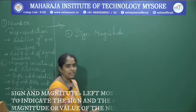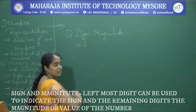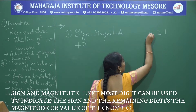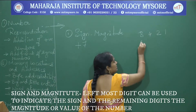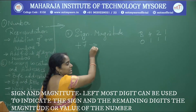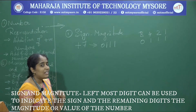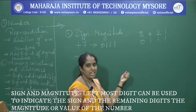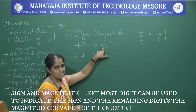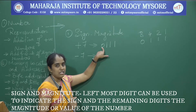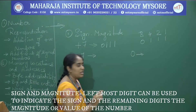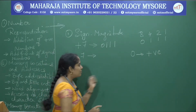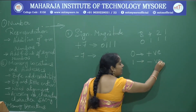In the sign and magnitude system, take the example of plus 7. We know the 1, 2, 4, 8 system. For 7 it is 0111. So in sign and magnitude, plus 7 is represented as 0111. For a negative number, say minus 7, the most significant bit is used to represent the sign. If the most significant bit is 0, it represents a positive number; if it is 1, it represents a negative number.